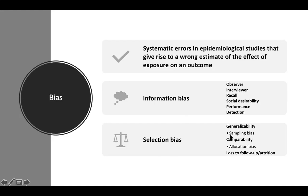Generalizability relates to sampling bias. You'll notice that people who generally volunteer for studies tend to be more health-conscious. Because of that, people who are more health-conscious don't give us a general representation of the population — the sample is just not very generalizable. So that's a bias in epidemiological studies.